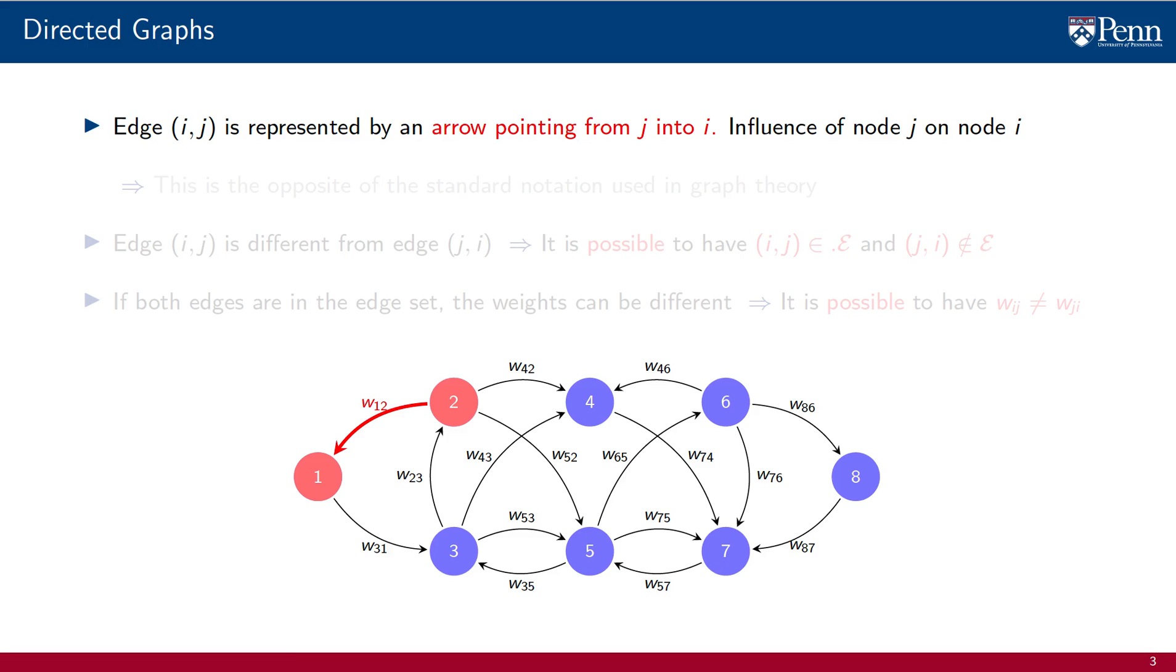Let me repeat that the edge (i, j) is graphically represented by an arrow that points from node j into node i, and that this arrow stands in for the fact that node j can have some influence on node i. I am repeating this because it is the opposite convention that is common in graph theory. This convention simplifies notation when we define graph shift operators.